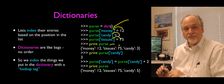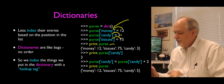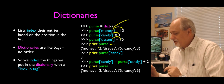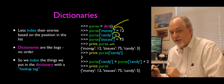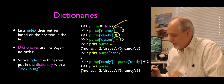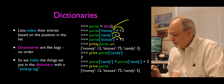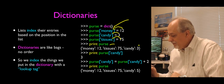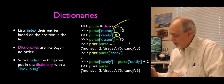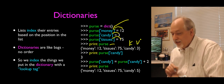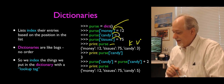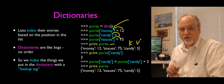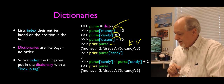When I look at that dictionary, it's not just the numbers 12, 3, and 75 as it would be in a list. It is the connection between money and 12, tissues and 75, candy and 3. In key-value terms, candy is the key and 3 is the value.